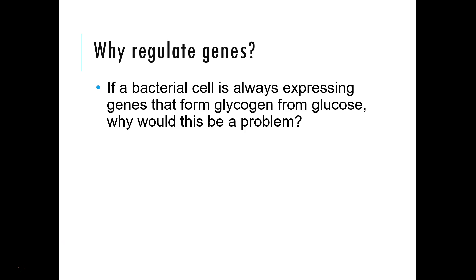The bacterium is always expressing genes that form glycogen from glucose. The problem is it needs that glucose, and it's always making more glycogen — always competing to use it faster than it's actually being made. So being able to switch genes on and off is a much, much better option for the bacterium.